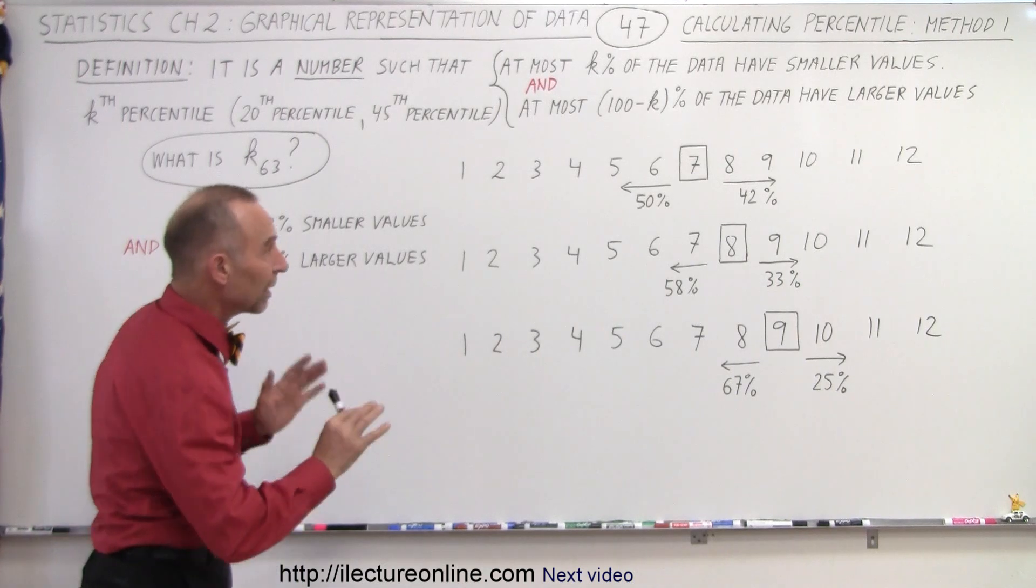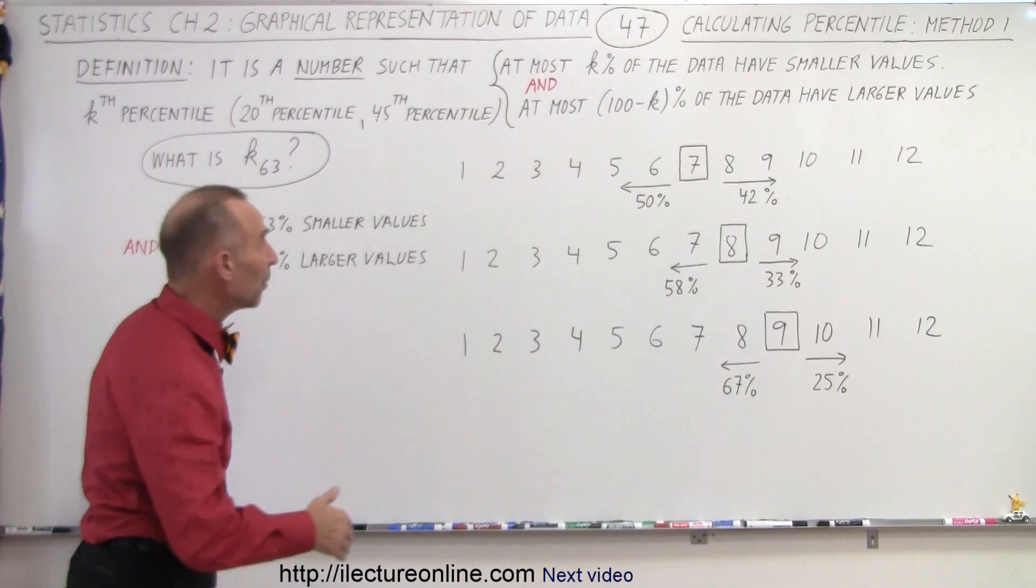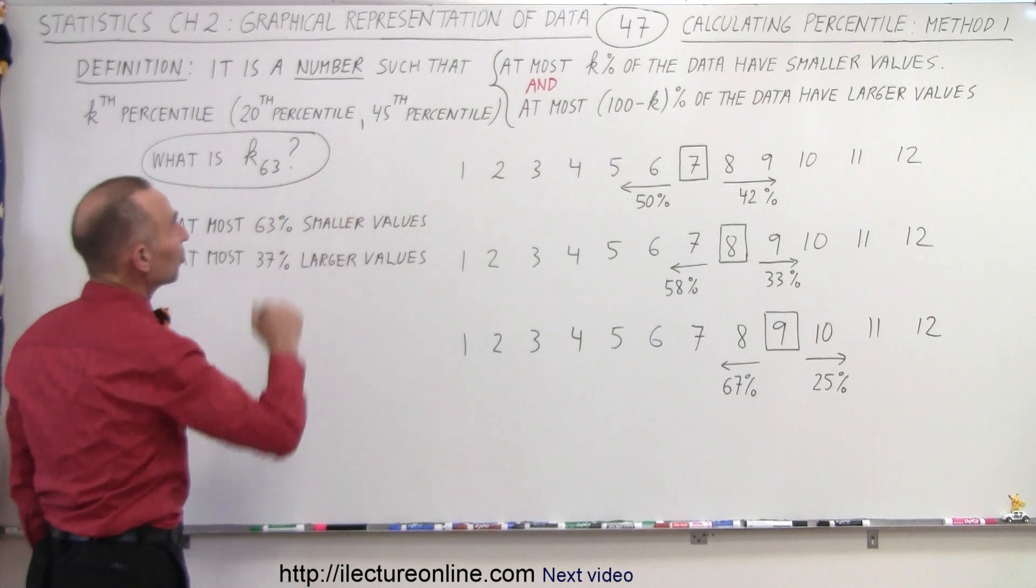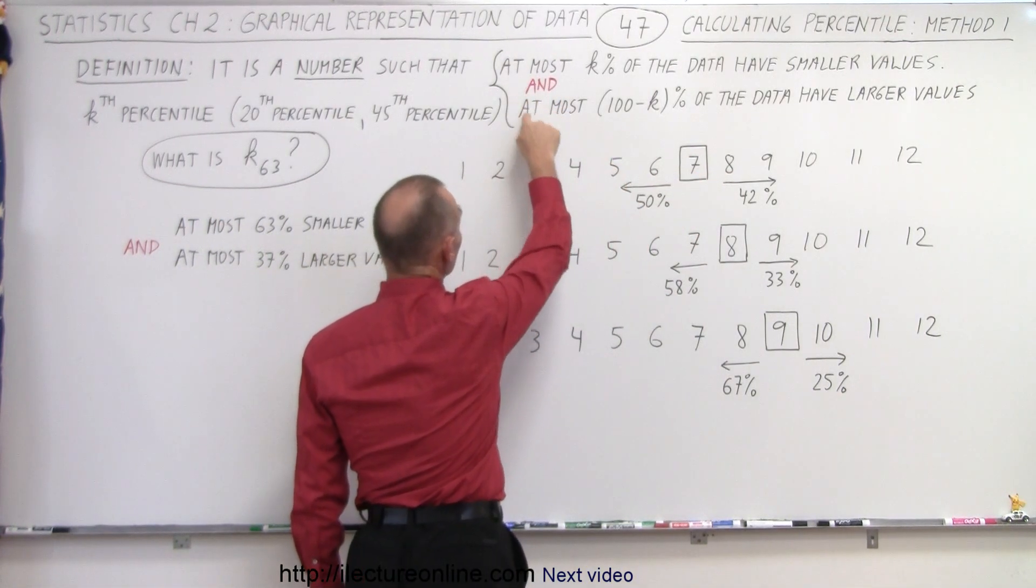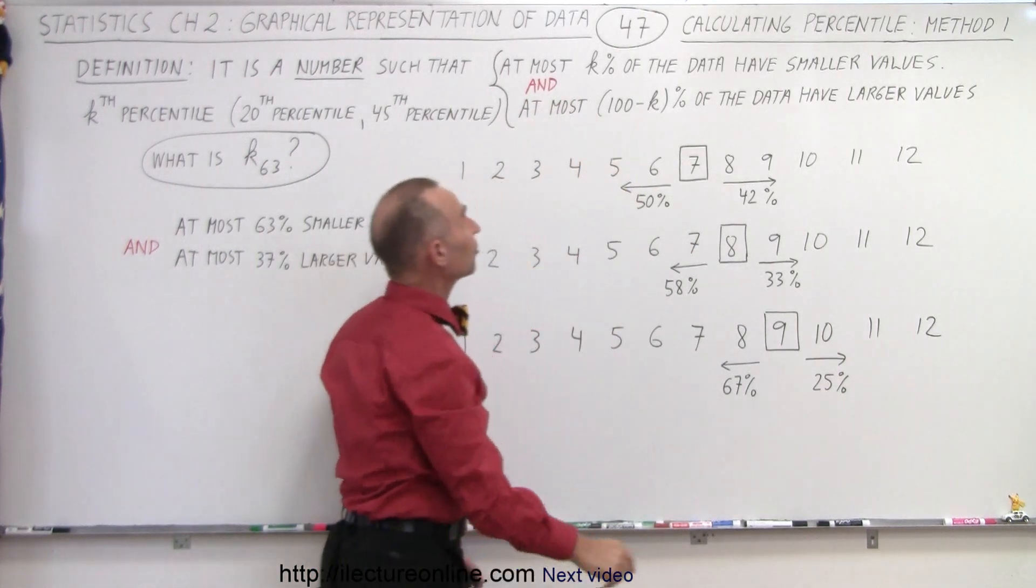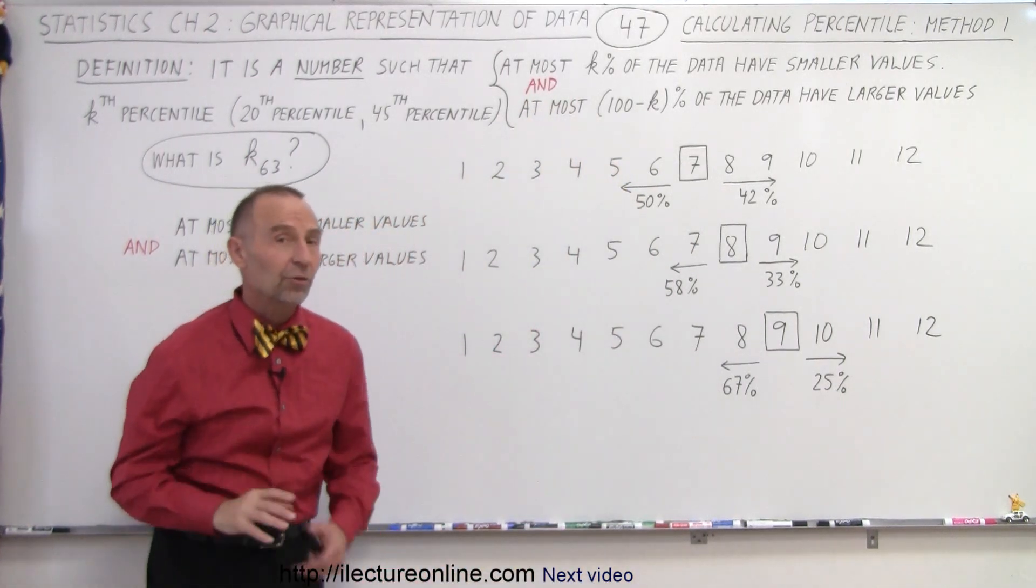But initially, we're going to take method 1 like we did before, and we're going to use the definition that at most k percent of the data have smaller values. And it's an AND condition. At most 100 minus k percent of the data have larger values.